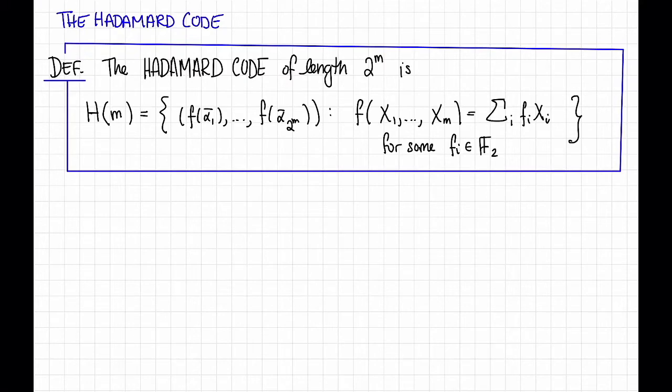It's the set of all vectors f(α₁), f(α₂), dot dot dot, up to f(α₂^m), where these αᵢ's are all of the points in F₂^m, and where f is a function of this form.